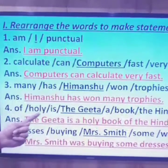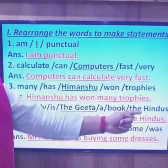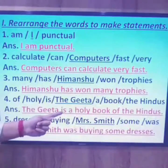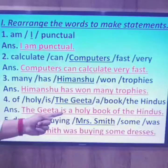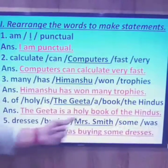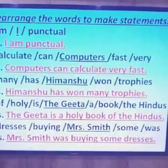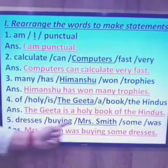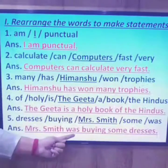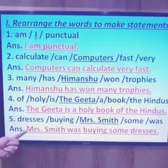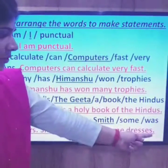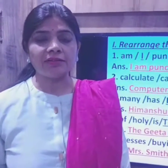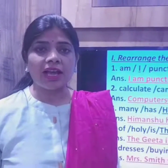Next: 'of Holly is the Gita a book the Hindus.' The Gita is already underlined as the subject, followed by helping verb 'is', then the predicate 'a holy book of the Hindus.' Next: 'dresses buying Mrs. Smith some was.' The subject is 'Mrs. Smith', followed by helping verb 'was', then action word 'buying'. The sentence becomes: 'Mrs. Smith was buying some dresses,' ending with a full stop. In all these statements, sentences start with a capital letter and end with a full stop.